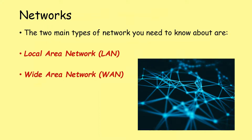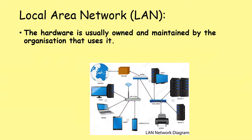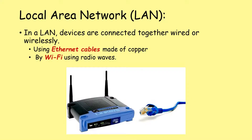There are two main types of network you need to know about: local area networks (LANs) and wide area networks (WANs). A local area network is a computer network located within a small geographic area — this may be in one building, for example a home or an office, or it might be a group of buildings like a school or a university. With a local area network, the hardware is usually owned and maintained by the organization that uses it. Devices are connected together wired or wirelessly — we can use ethernet cables made of copper or use radio waves with Wi-Fi.